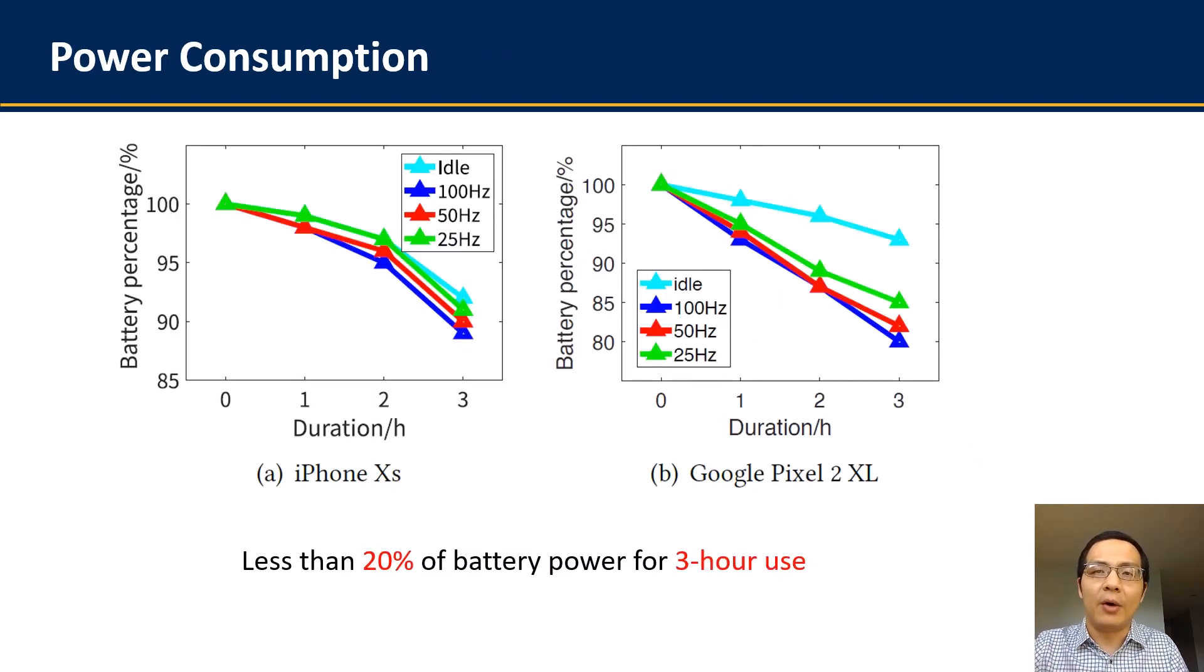We also evaluated the power consumption. Since the digital magnetometer is very power efficient, MagHacker consume very little amount of power. And we examined the power consumption over two different smartphone models, and the power consumption is less than 20 percent in the continuous use of three hours.